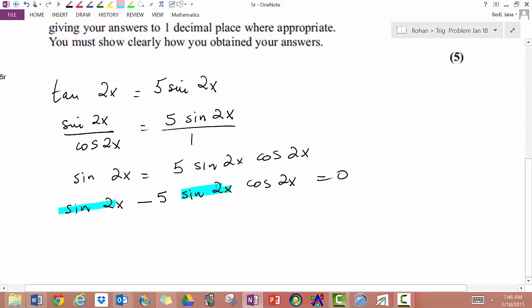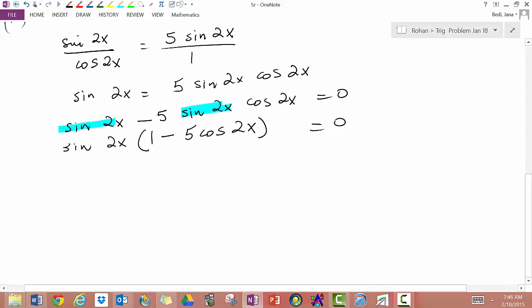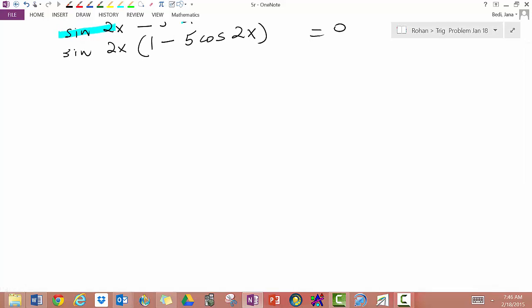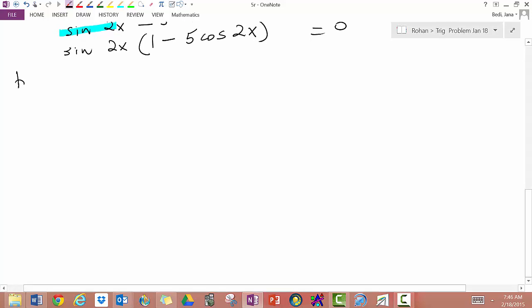So take it out as a common factor. When you do that you get sine 2x times 1 minus 5 cosine 2x equals 0. So this is part A so far. In part B you are going to use this equation to solve for x.